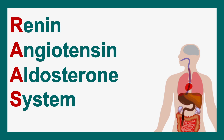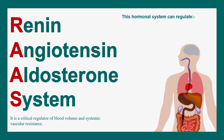In this video, we'll talk about the renin-angiotensin-aldosterone system, which is a hormonal system that regulates blood volume and blood pressure. This particular system can regulate blood pressure, fluid and electrolyte balance, and systemic vascular resistance.